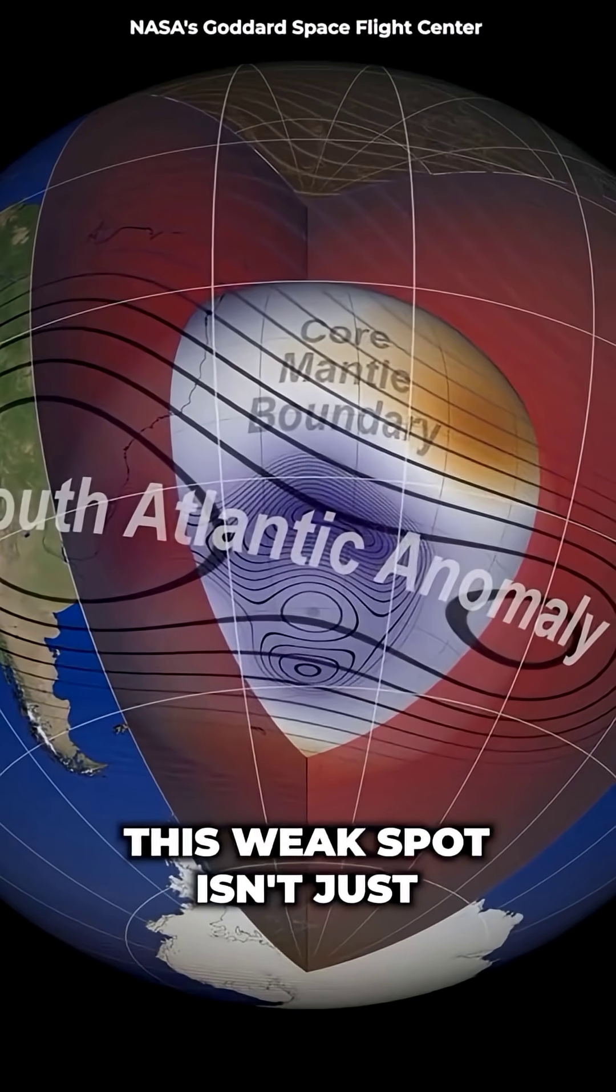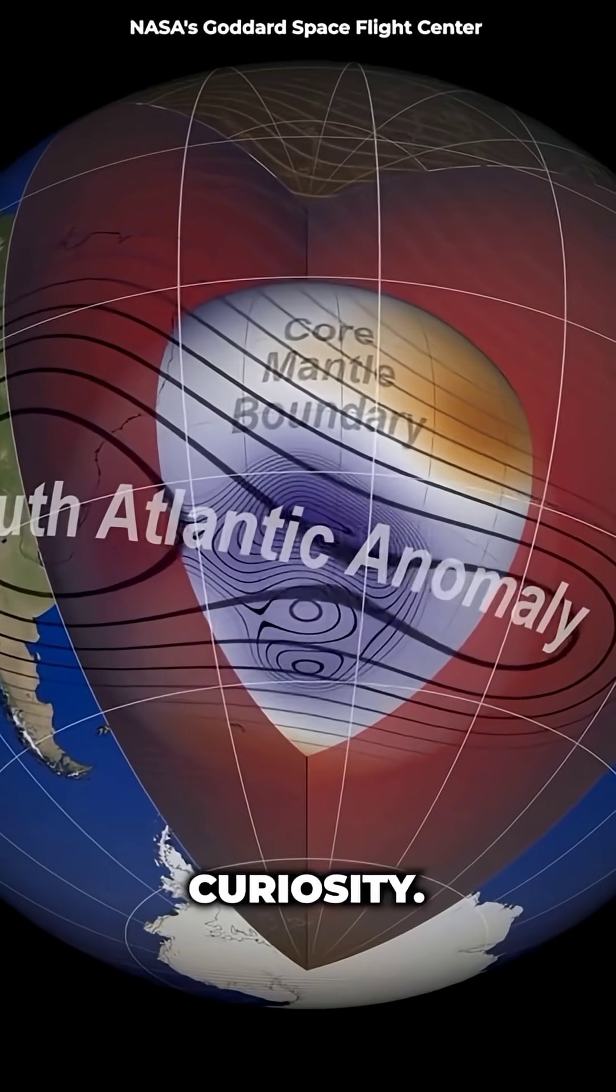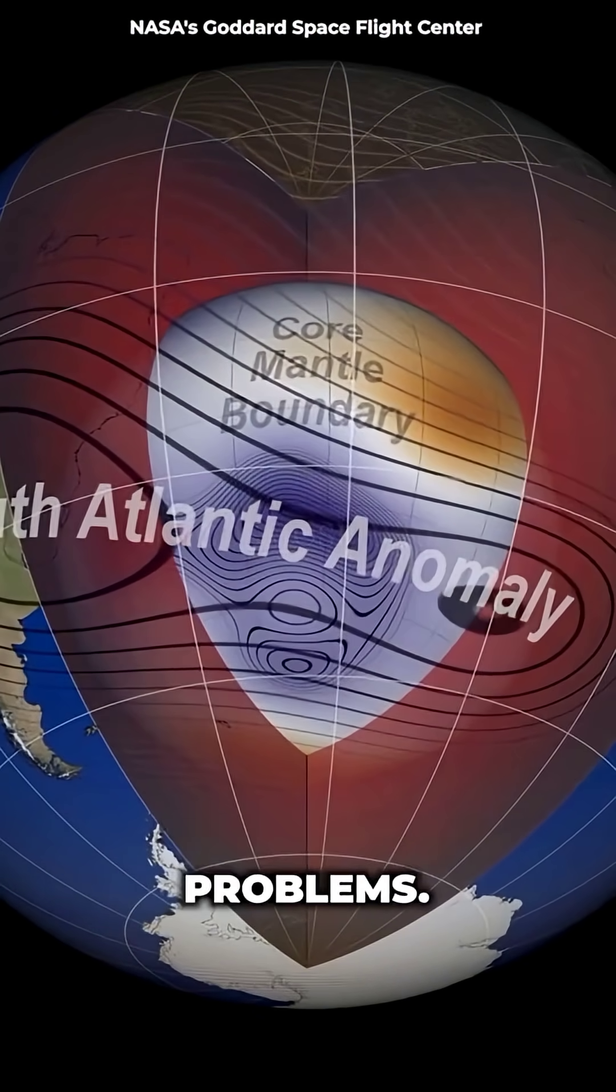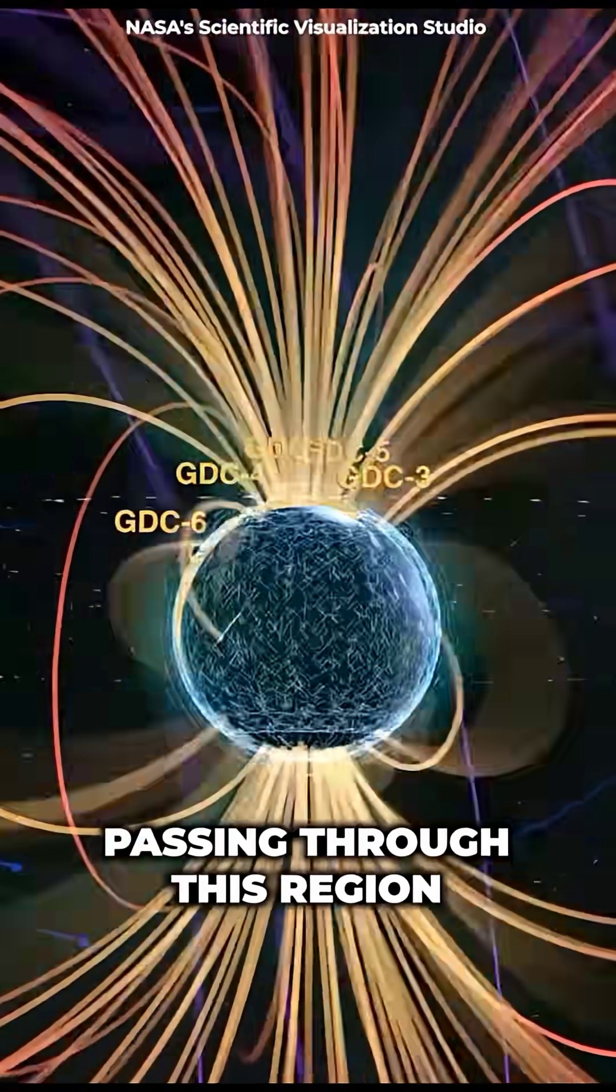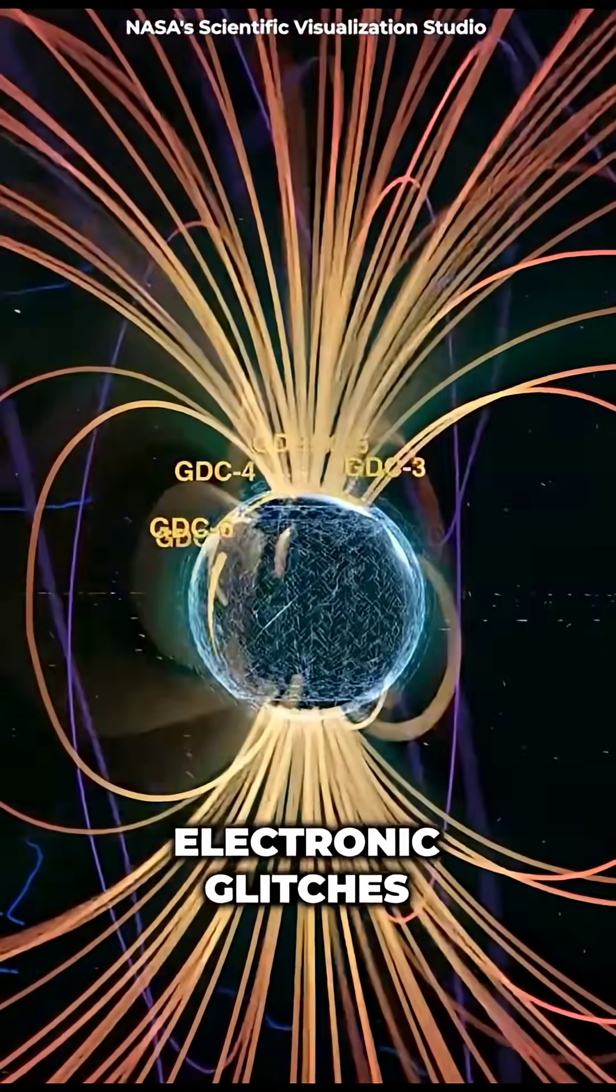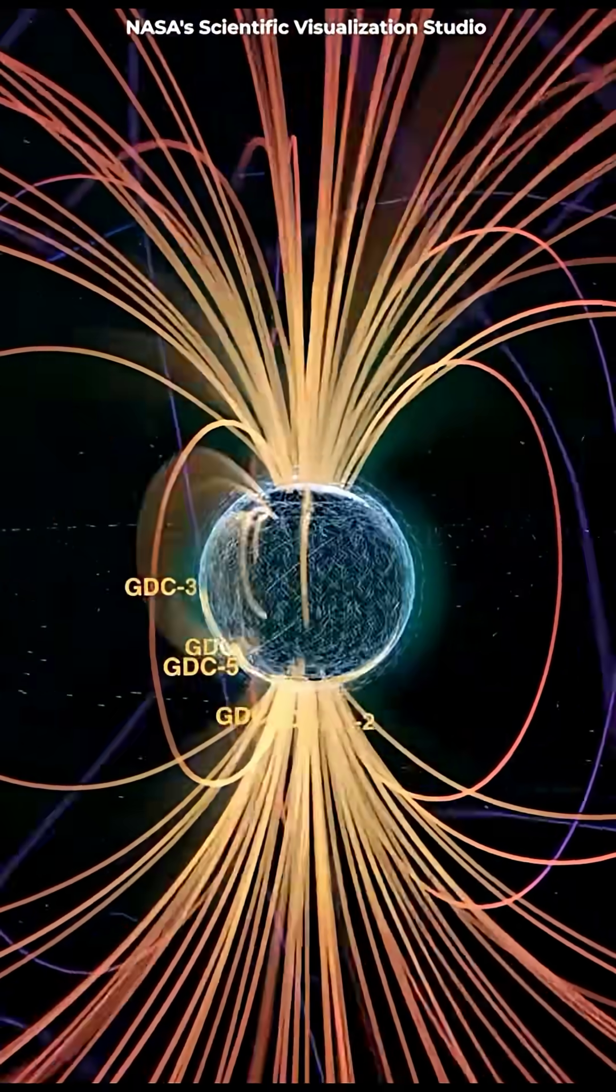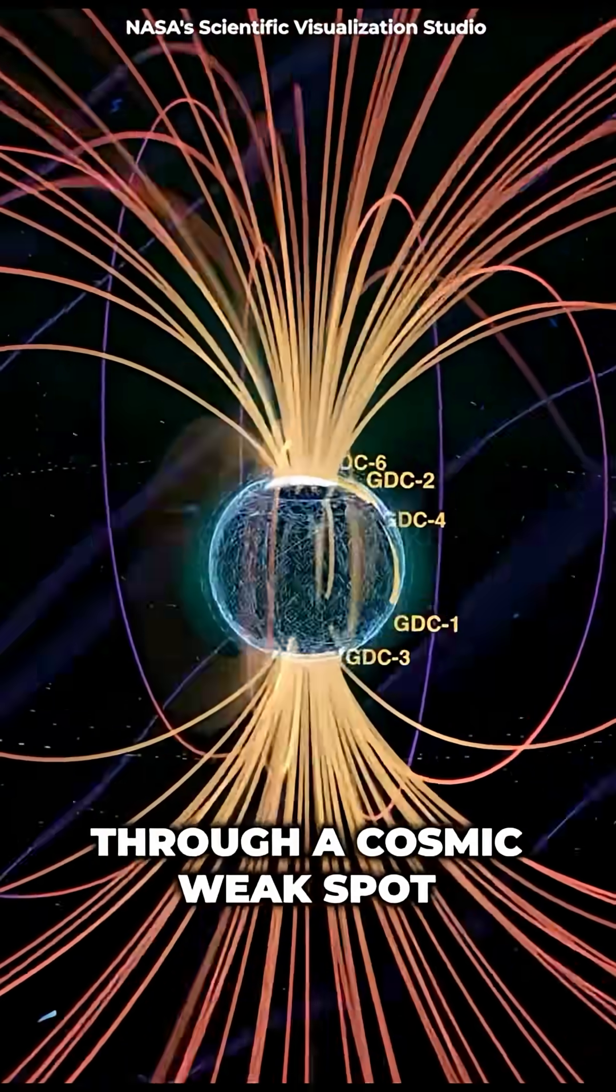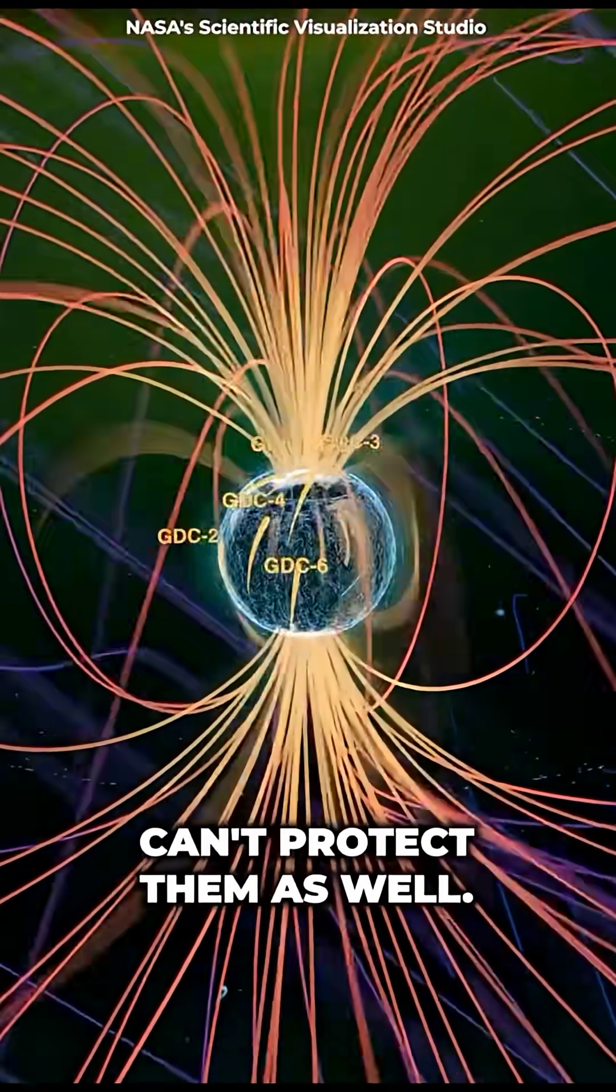This weak spot isn't just an interesting scientific curiosity. It's already causing problems. Satellites passing through this region regularly experience electronic glitches and failures. It's like they're passing through a cosmic weak spot where our shield can't protect them as well.